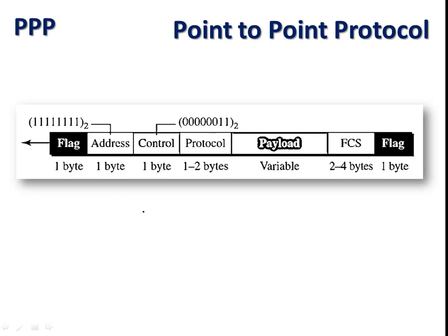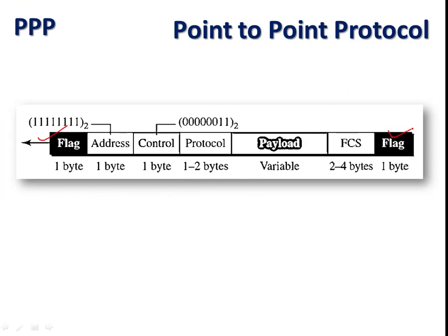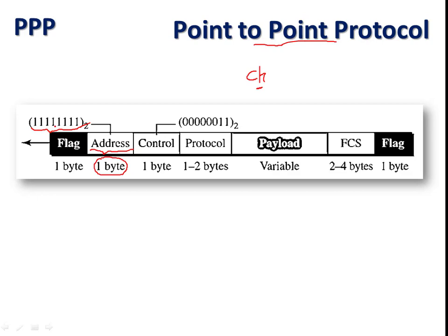The frame format in Point-to-Point Protocol contains several defined fields. The first and last fields are flags, because the payload field is variable — not fixed. The flags help the receiver identify where the frame starts and where it ends. PPP uses character-oriented (byte-oriented) framing, so information is carried in the form of bytes — groups of bytes carry user data from one point to another.